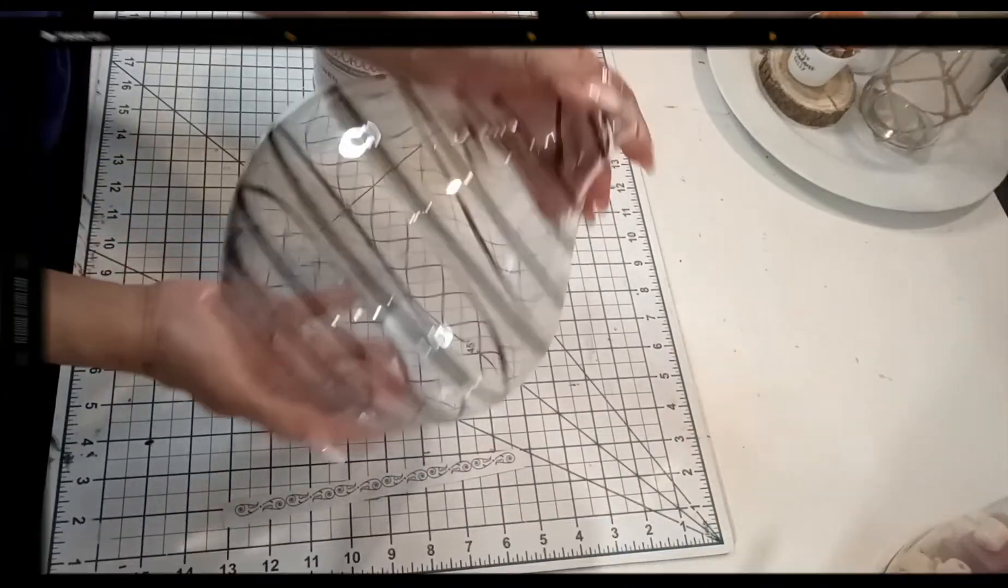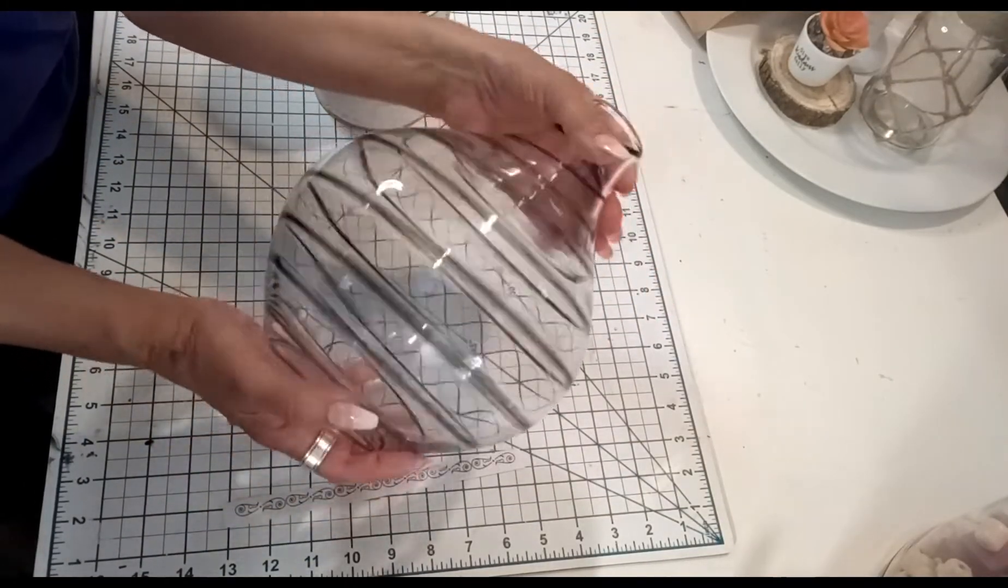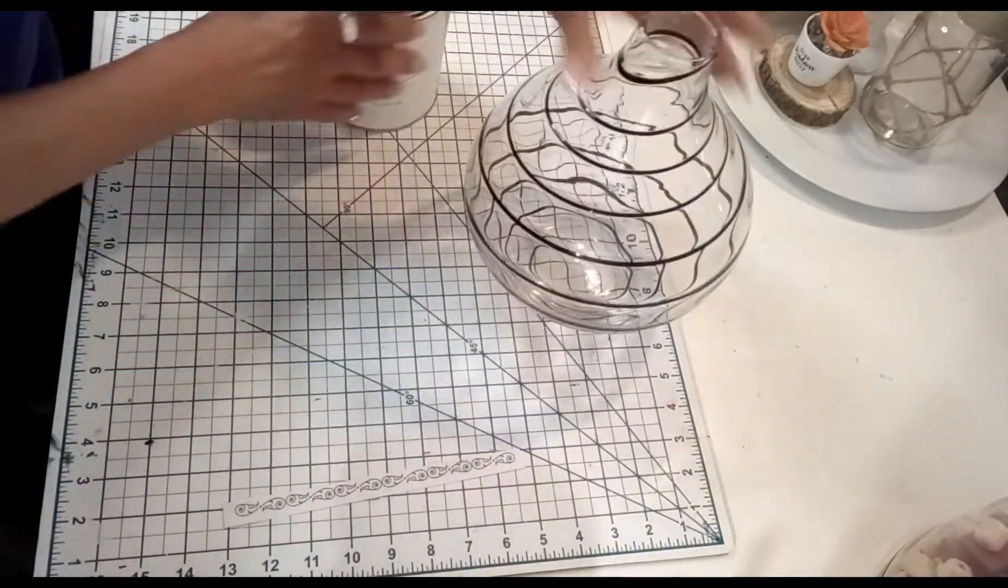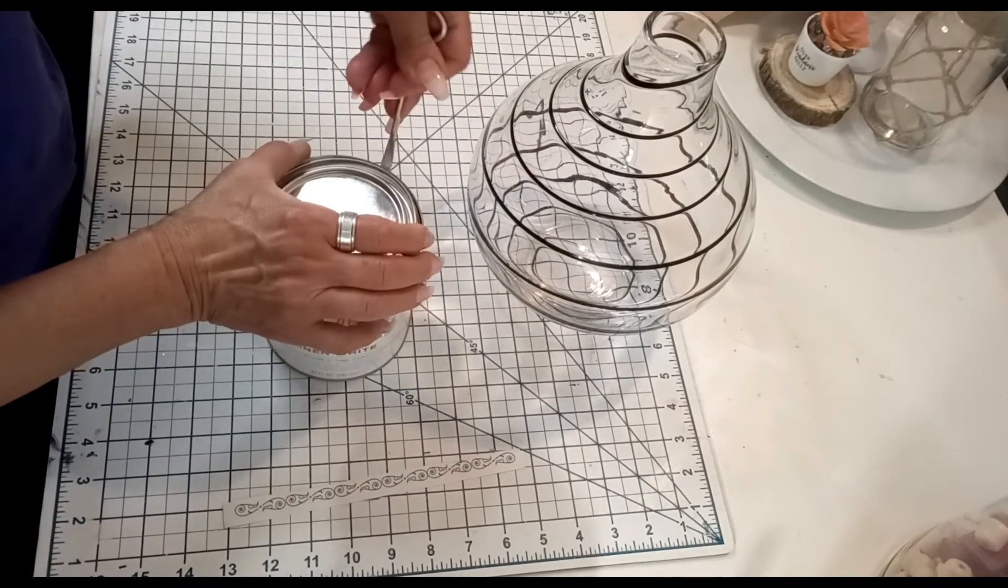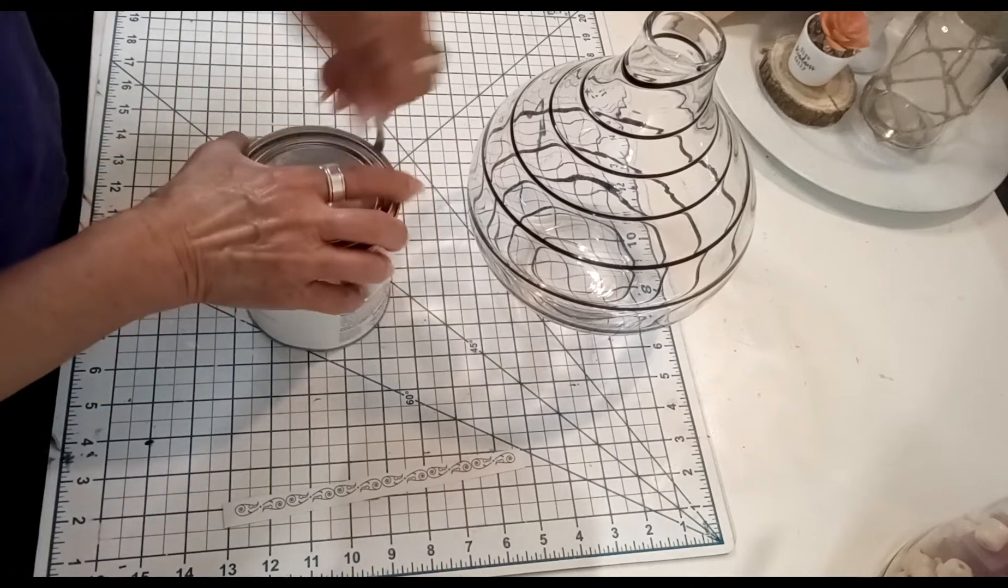For our final DIY, I got this vase. I really don't remember where I got this vase from, but I am going to be painting it with white chalk paint and the color is linen white.